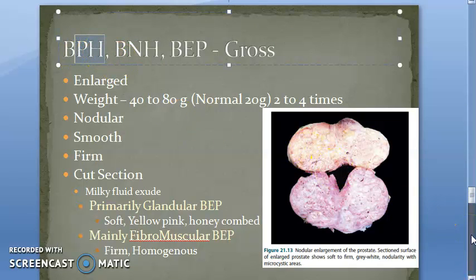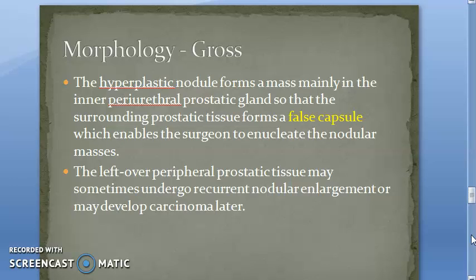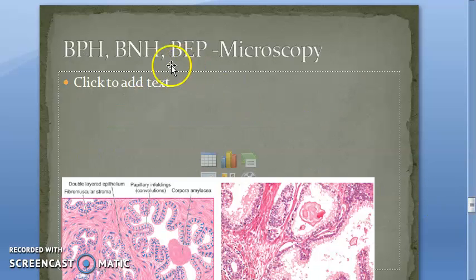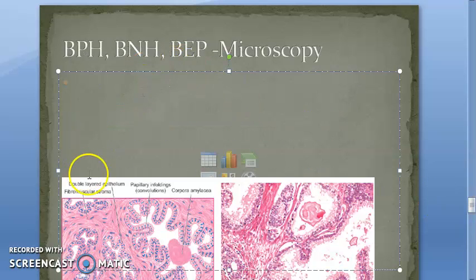That covers the gross morphology of benign prostatic hyperplasia. Let us move on to microscopy in the next video.